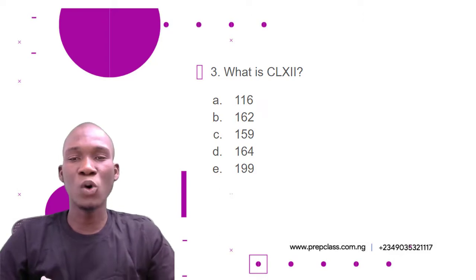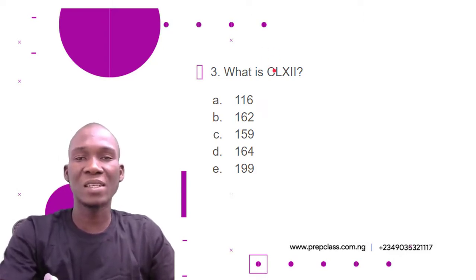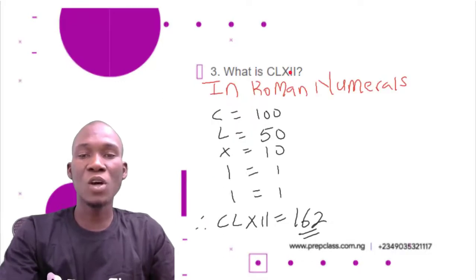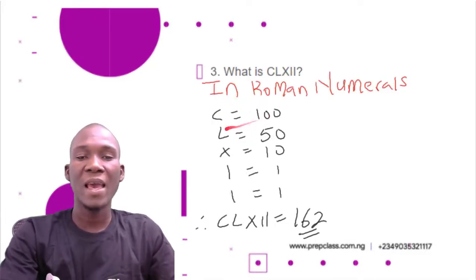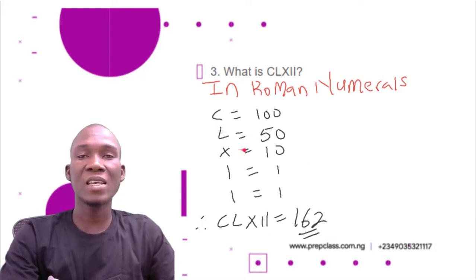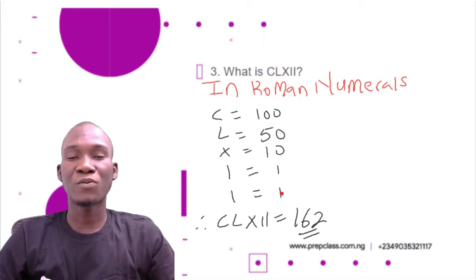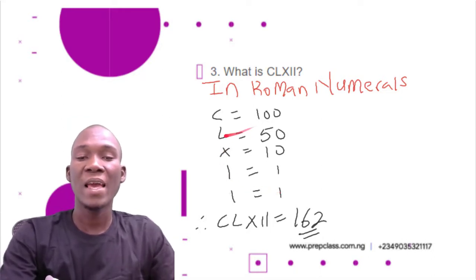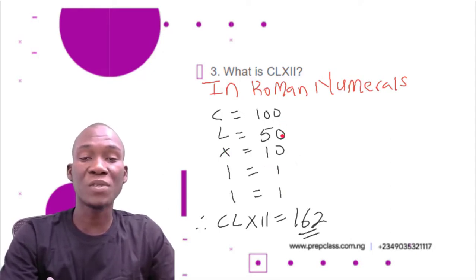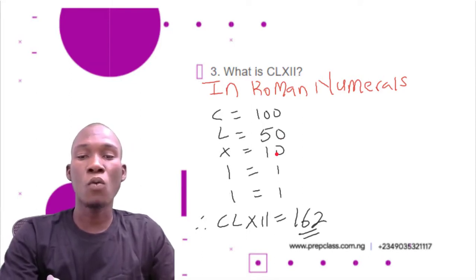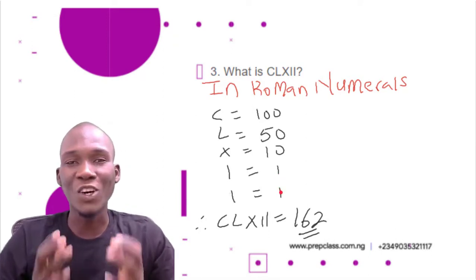We must know what each symbol stands for: C equals 100, L equals 50, X equals 10, I equals 1. To convert from Roman numerals into figures we add what each symbol stands for: 100 + 50 = 150; 150 + 10 = 160; 160 + 1 = 161; 161 + 1 = 162.